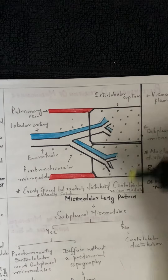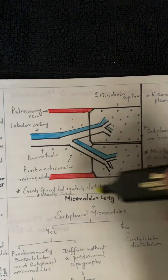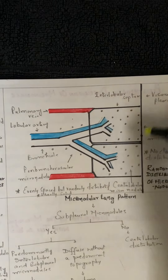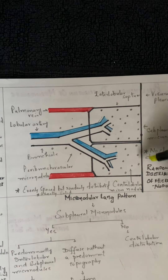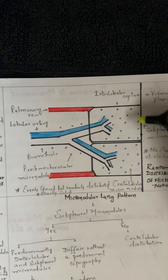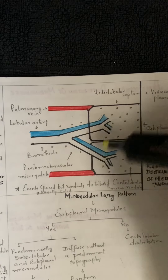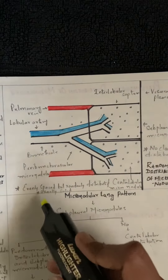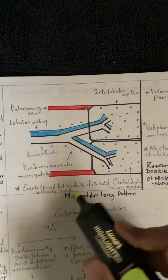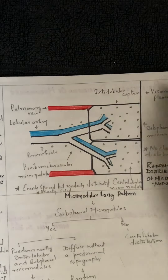Coming to random nodules: they have no clear distribution pattern. They are not specifically centrilobular or perilymphatic. They can be located in the subpleural region, the centrilobular area, along the peribronchovascular region, and in the interlobular septum. They are evenly spaced but randomly distributed. They are usually solid.